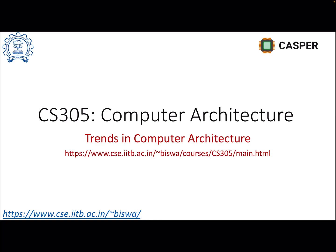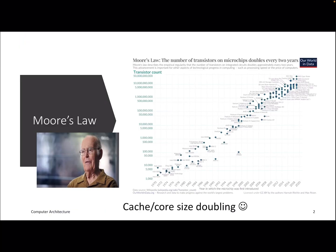This will be the last lecture on computer architecture, where we'll discuss current trends and past trends in the field. Architecture courses usually start with Moore's Law, but I'm finishing this course with it. Moore's Law states that the number of transistors on a processor doubles every two years or 18 months.